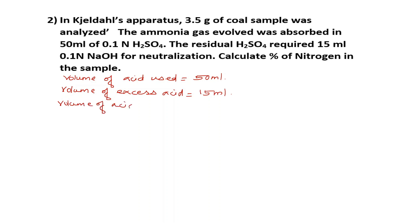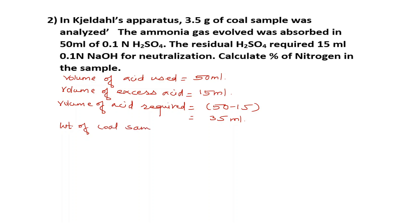Volume of acid required is 50 minus 15, which is 35 ml. Weight of coal sample is 3.5 grams. Normality of acid is 0.1 normal.